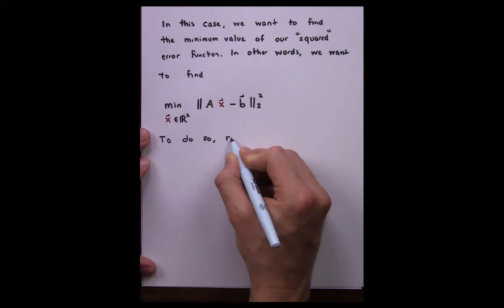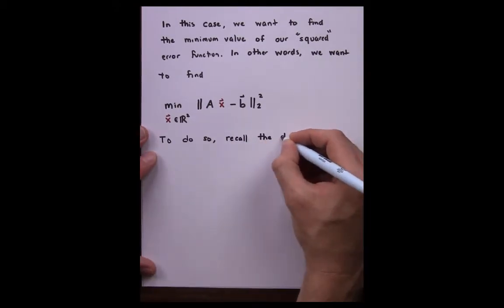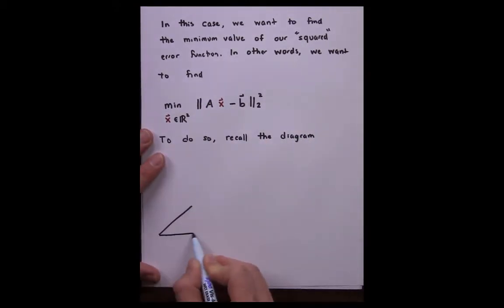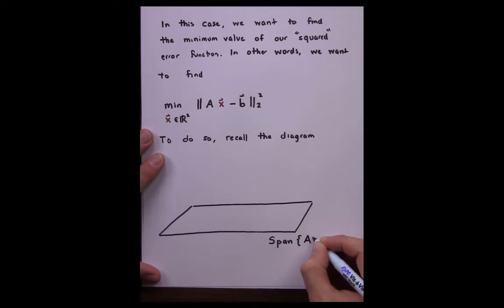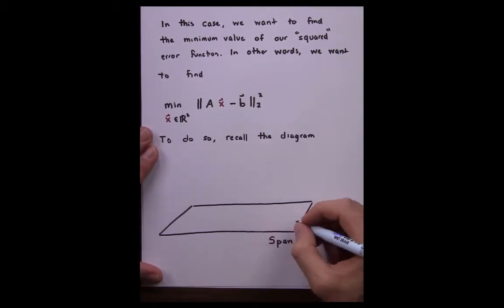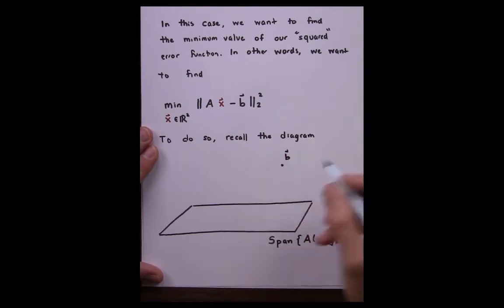To do so, recall the diagram used to visualize least-squared techniques. We begin by drawing a plane to represent the span of the columns of A. Then we represent the vector B, which is not completely contained in the span.